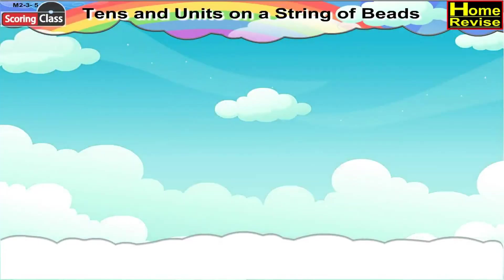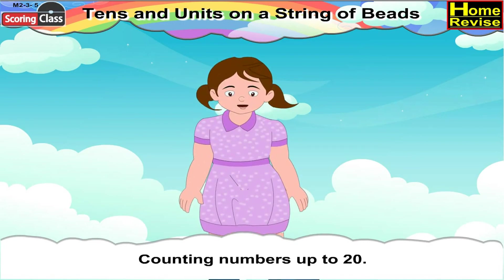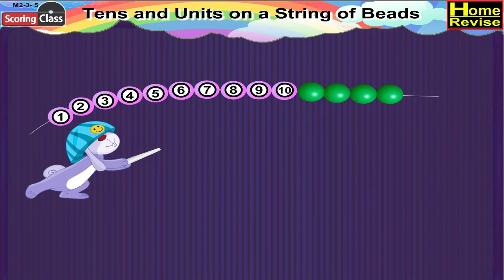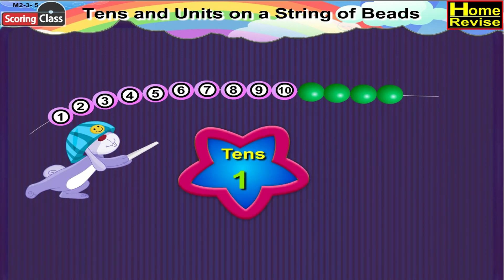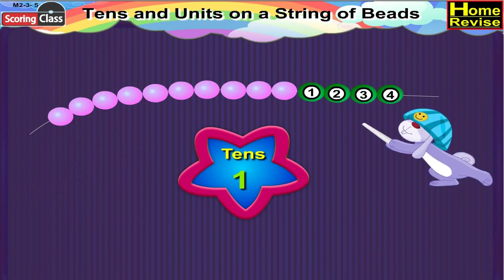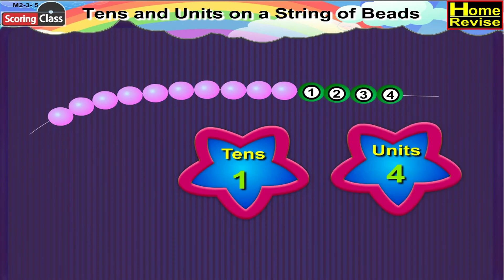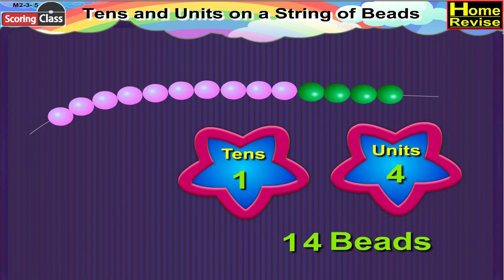Tens and units on a string of beads — counting numbers up to twenty. If you notice the first string of beads, the pink beads are ten in number, meaning they are one ten. And four green beads remain, which means it is one ten, four units. So in total it is fourteen beads.